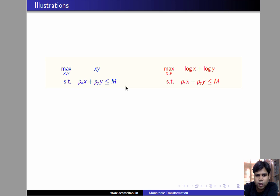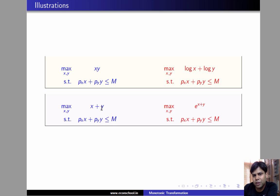Let us look at another one. Suppose we are maximizing x + y subject to the budget constraint. The theorem says that if you alter the objective to e^(x+y), the solution will still be the same.